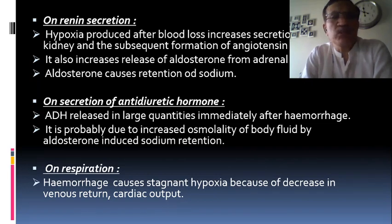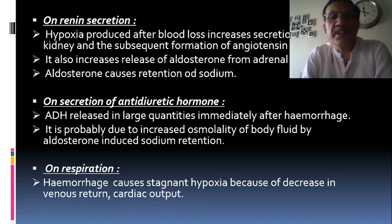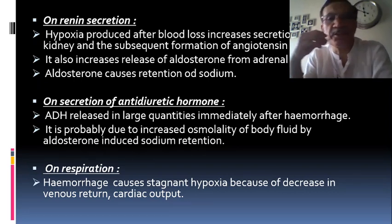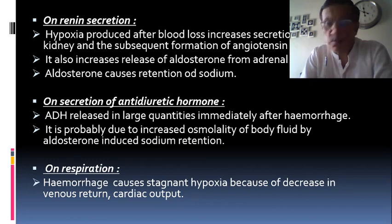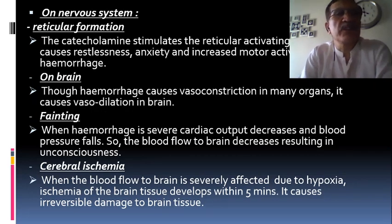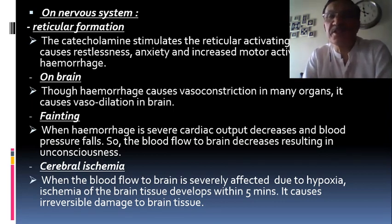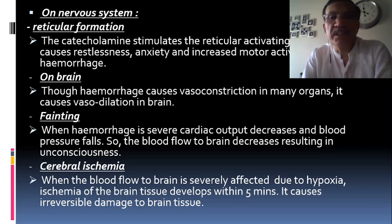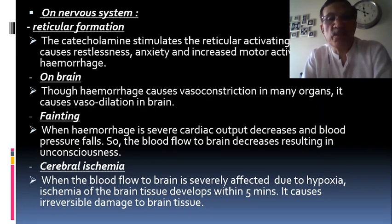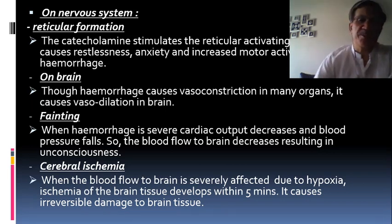ADH is released in large quantities after hemorrhage, probably due to increased osmolarity of body fluid from aldosterone-induced sodium retention. Hemorrhage causes stagnant hypoxia due to decreased venous return and cardiac output. On the nervous system, catecholamines stimulate the reticular activating system causing restlessness, anxiety, and increased motor activity. Though hemorrhage causes vasoconstriction in many organs, it usually causes vasodilatation in the brain. When hemorrhage is severe, cardiac output decreases and blood flow to the brain decreases, resulting in unconsciousness. Cerebral ischemia can cause irreversible damage to brain tissue within 5 minutes if blood flow is severely affected.